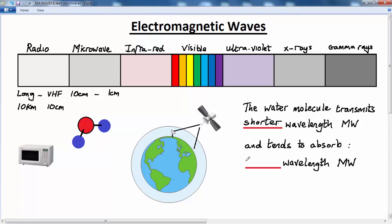and absorbs the longer wavelength microwave, that's the lower frequencies. So as a very general rule of thumb, the longer wavelengths, that's to say the lower frequencies of microwave, are absorbed by the water molecule, while the shorter wavelengths, that's the higher frequencies, are transmitted by the water molecule.